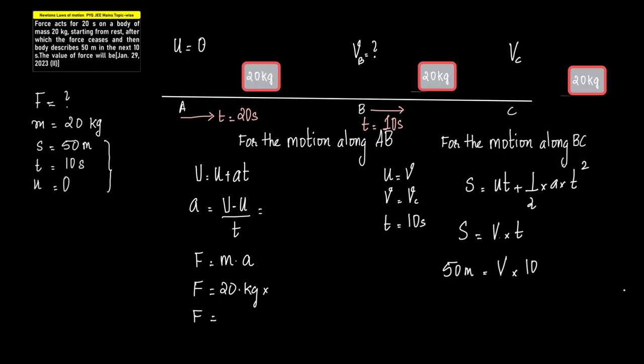Given to us: mass is 20 kilograms, for the second half 10 seconds the distance covered is 50 meters, u is zero because it is starting from rest.